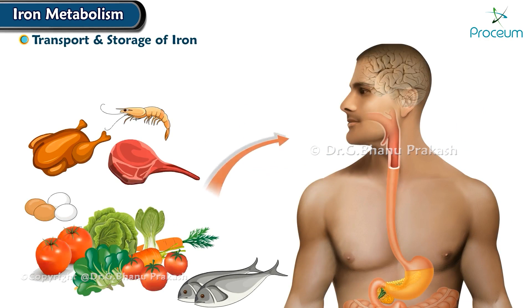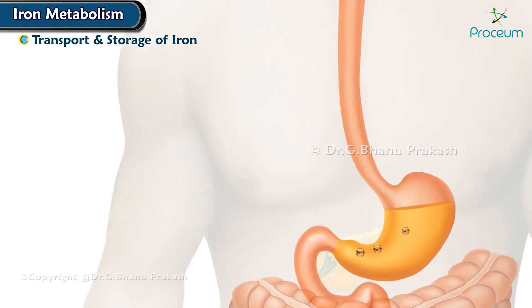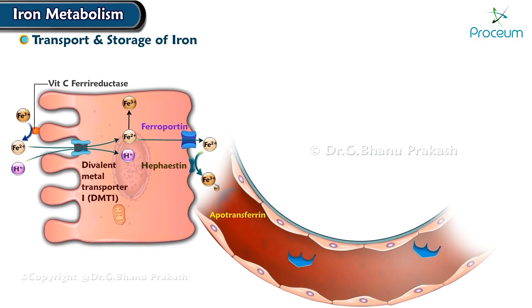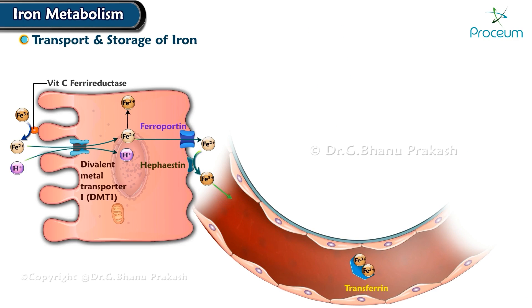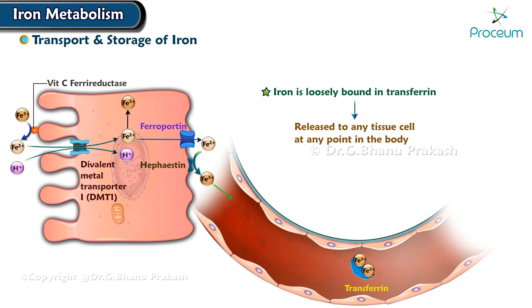Transport and storage of iron. When iron is absorbed from the small intestine, it immediately combines in the blood plasma with a beta globulin called apotransferrin to form transferrin, which is then transported in the plasma. The iron is loosely bound in the transferrin and consequently can be released to any tissue cell at any point in the body.